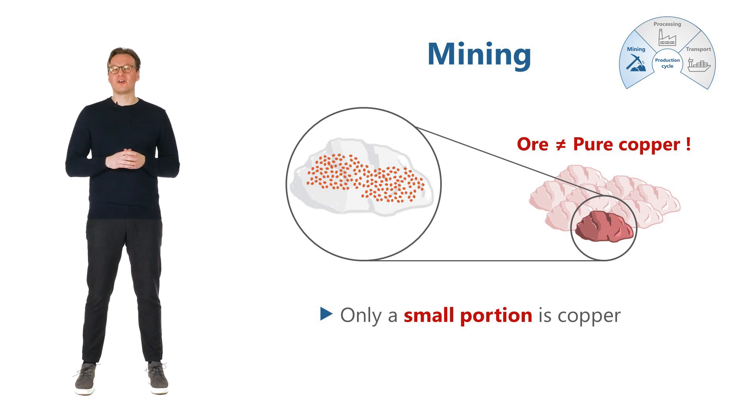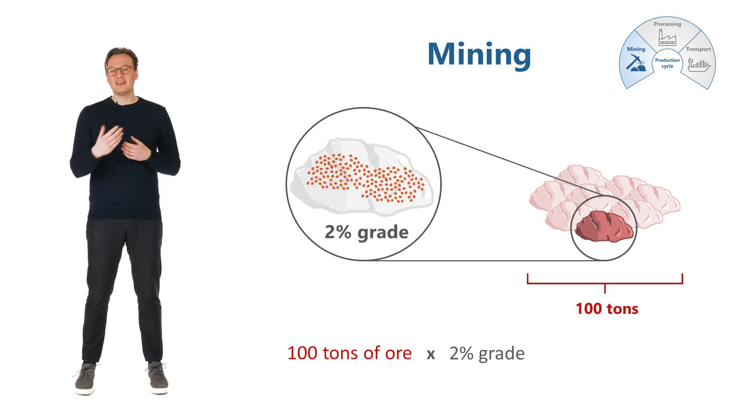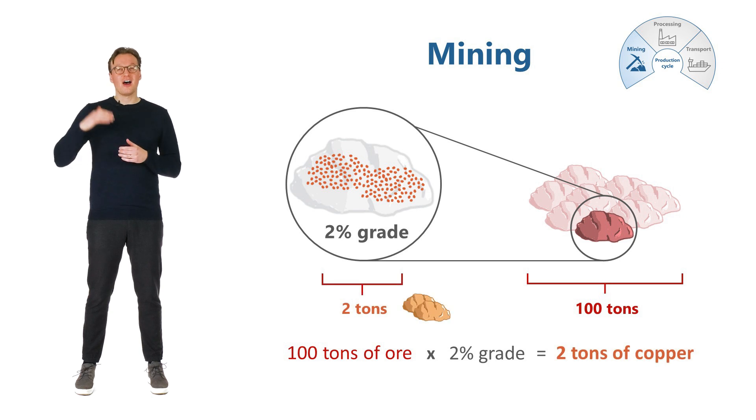2% is what we call the grade. The ore has a 2% grade, meaning that in the 100 tons of ore, we believe we have 2 tons of recoverable copper. A higher grade means more copper is contained in the ore.